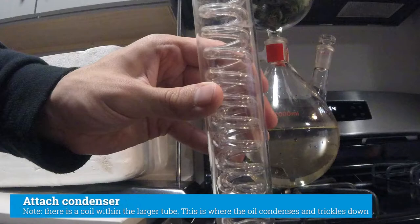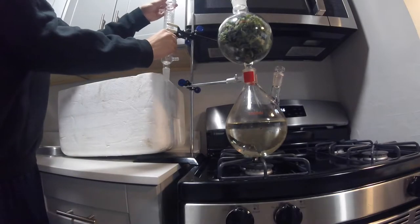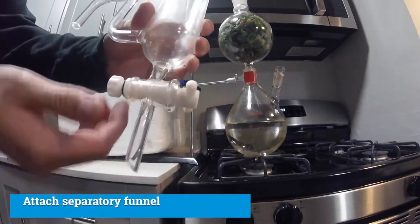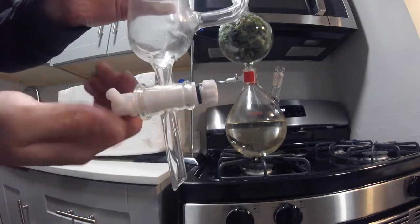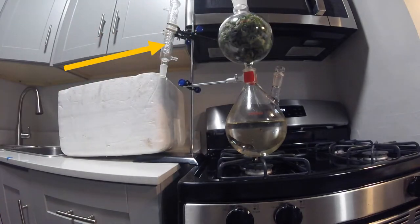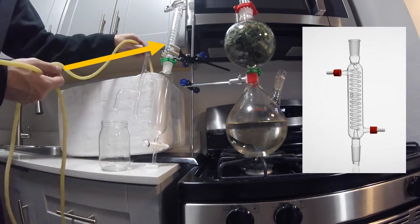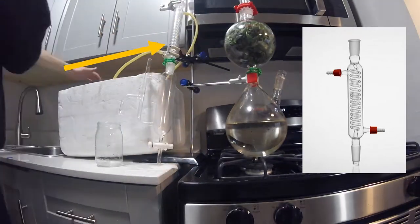You'll notice that the condenser actually consists of two tubes. Here we have the separatory funnel, which allows for precise control when separating the oil from water. Now back to the condenser. It has this interesting design because the outer tube gets pumped with cold water, while the inner tube is where the oil condenses, with the help of a little ice.